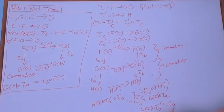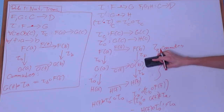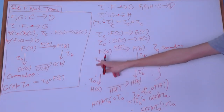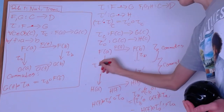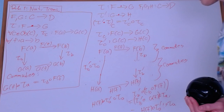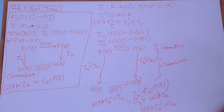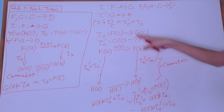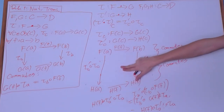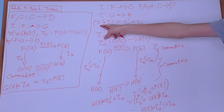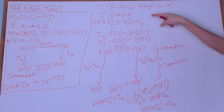Now that the entire diagram commutes, we can remove the middle section. What remains is a diagram with tau A prime composed tau A on one side and tau B prime composed tau B on the other, connected by F of f and H of f. This diagram commutes — it is exactly the naturality diagram for the composed natural transformation. So the composition of two natural transformations is itself a natural transformation.